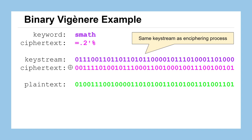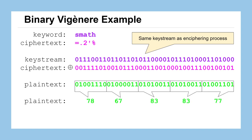The same operation both encrypts and decrypts — similar to how with previous algorithms you'd add a key to encrypt and subtract to decrypt, or multiply and then multiply by its inverse. Here we do the exact same operation with the same key to recover our plain text. We can confirm those 8-bit groups return decimal values corresponding to capital N, C, S, S, M.